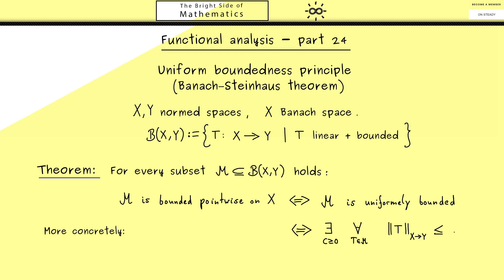Now going to the other notion, bounded pointwise on X means something different because here we don't look at the operator norm. However, we look at the norm of the images, which means we have the norm in Y and put in here an arbitrary x.